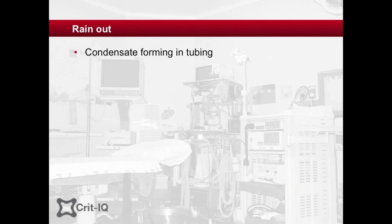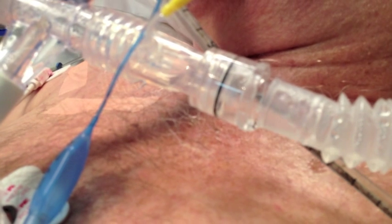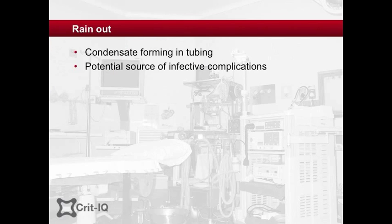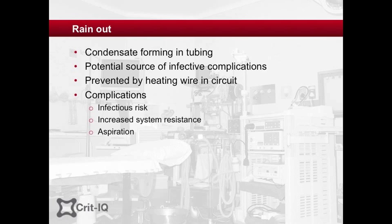Humidifying the circuit can result in condensation forming in the tubing, a phenomenon known as rain-out. Rain-out has been suggested as a potential source of microorganisms that can lead to ventilator-associated pneumonia. To combat this, some circuits include a heating wire that prevents gas cooling and condensation from forming. Rain-out should never be allowed to drain back into the humidifier as this exposes the patient to potential infection. It may also increase resistance in the circuit, interfering with ventilation, be accidentally aspirated by the patient during turning, and even trigger the ventilator — an event known as auto-triggering.